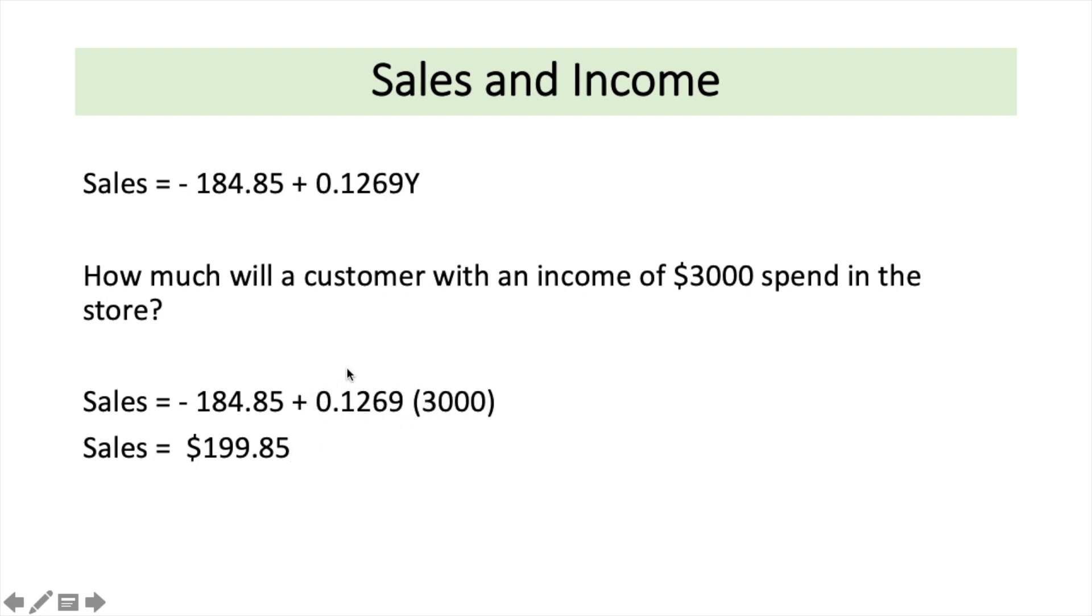So the slope here is going to tell us for every one dollar or ringgit that an individual's income increases, how much is going to be the increment in the sales? So why do I say increment? Because it's a positive value here. So if I plug in the values and I calculate and I solve this, the sales will be equal to 199.85.